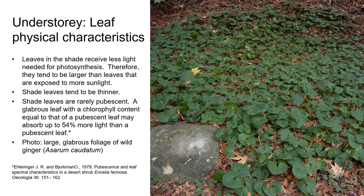The leaves of plants growing in the shade have several adaptations for optimizing photosynthesis in low light levels. In order to capture as much light as possible, the leaves of shade plants tend to be larger than leaves exposed to more sunlight. Shade leaves are rarely pubescent — this means hairy. A glabrous or smooth leaf that has a chlorophyll content equal to that of a pubescent leaf can absorb up to 54% more light than a pubescent leaf, because the hairs reflect some of the incoming solar radiation so it never reaches the chloroplasts, which are the organelles in the leaf cells that capture light.